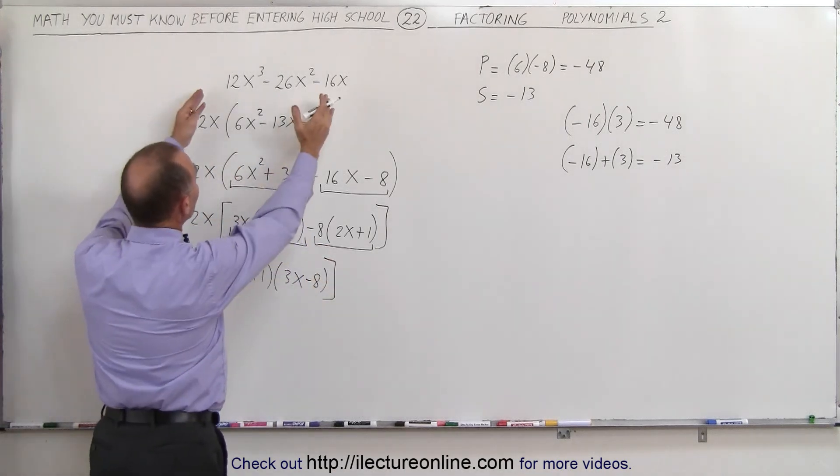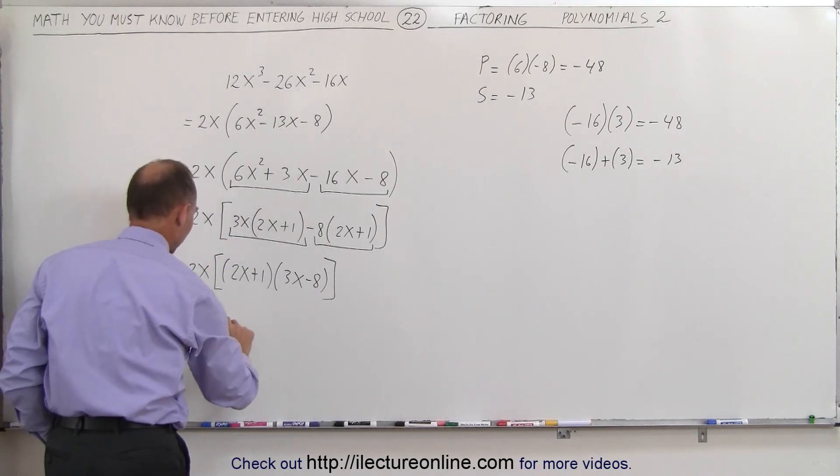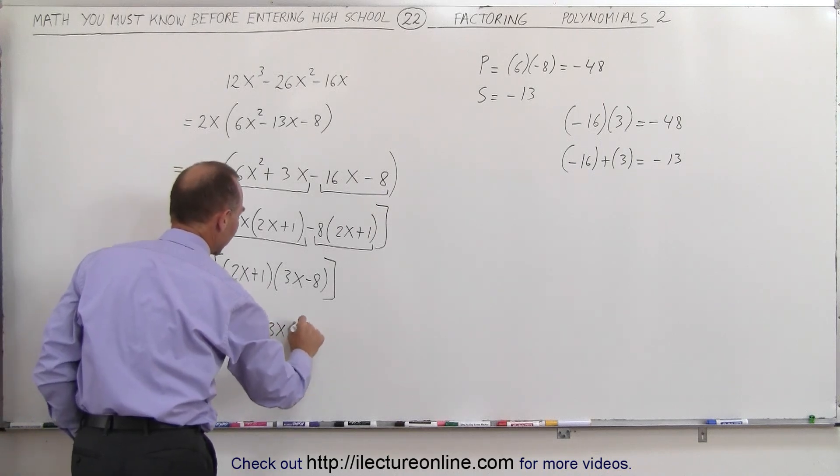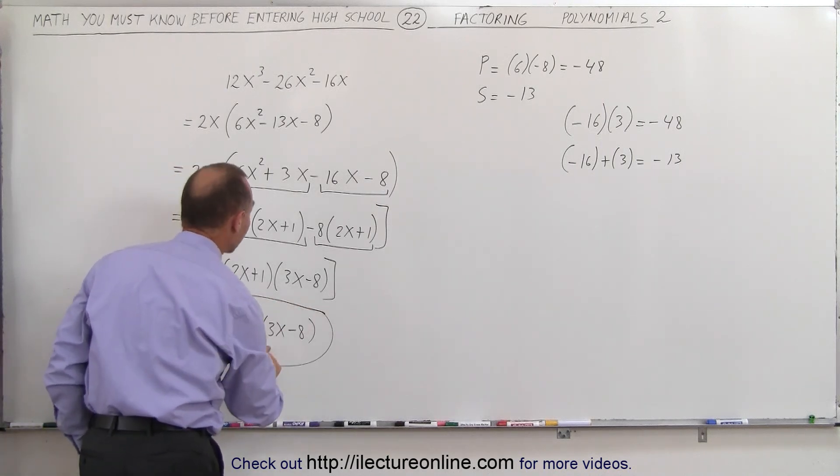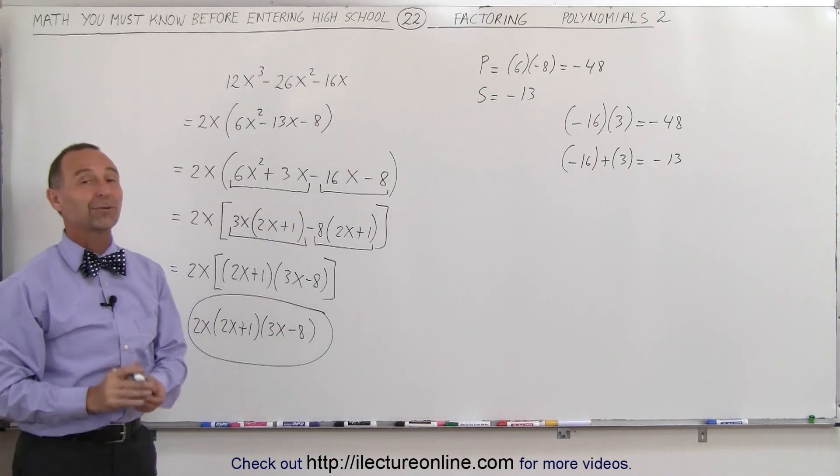So ultimately, when I take this and I factor it, this can be factored as 2x times 2x plus 1 times 3x minus 8. And that's the final answer. That's the factored form of this original problem. And that's how it's done.